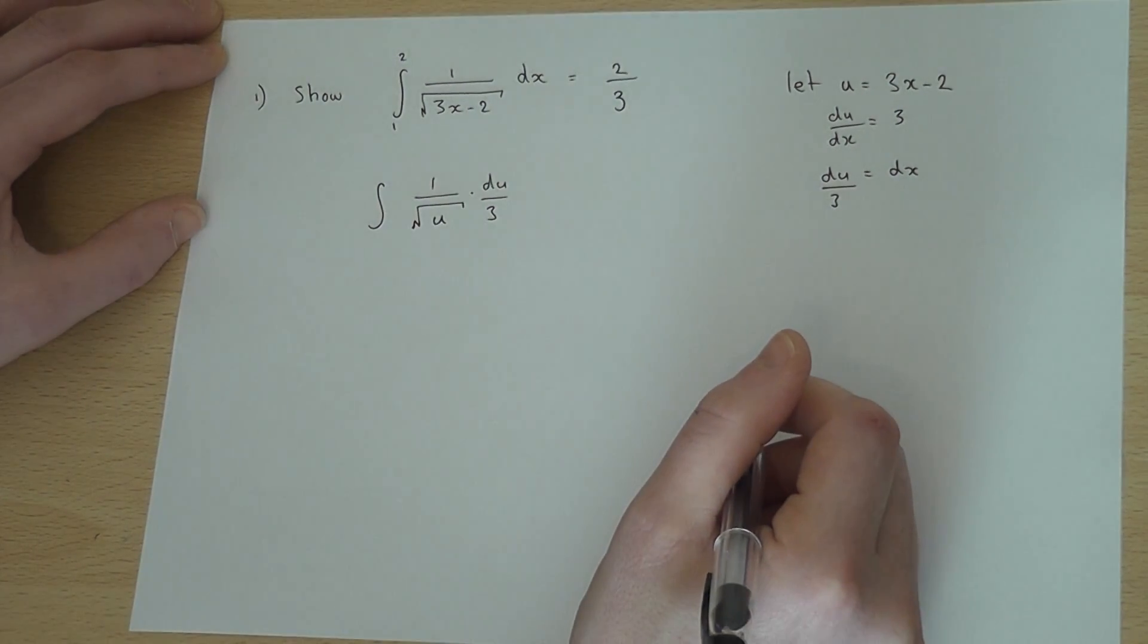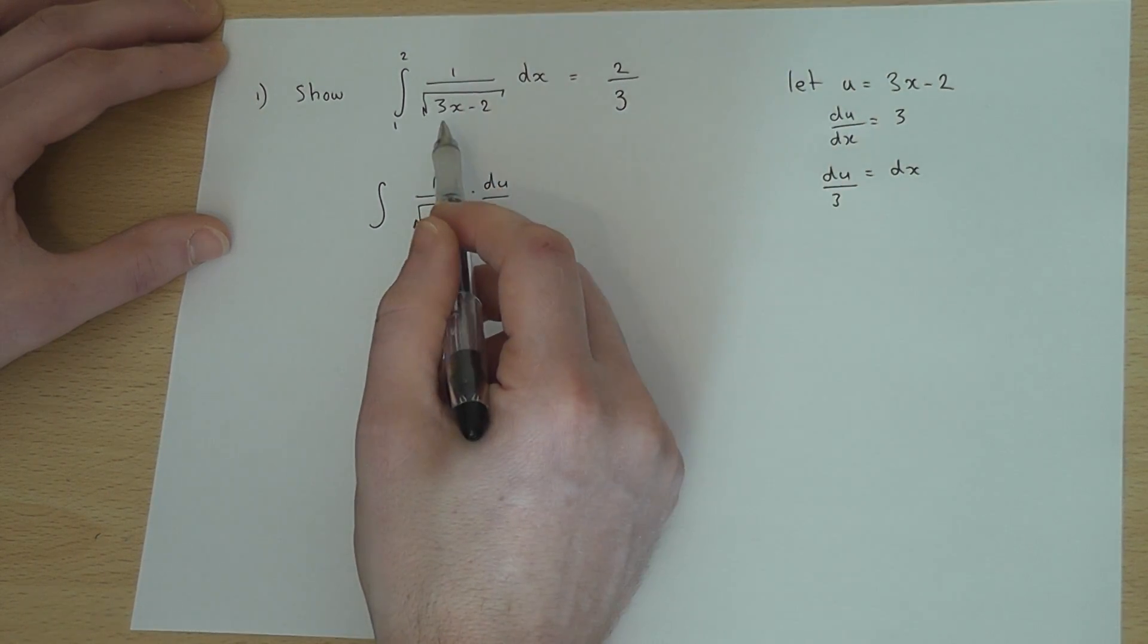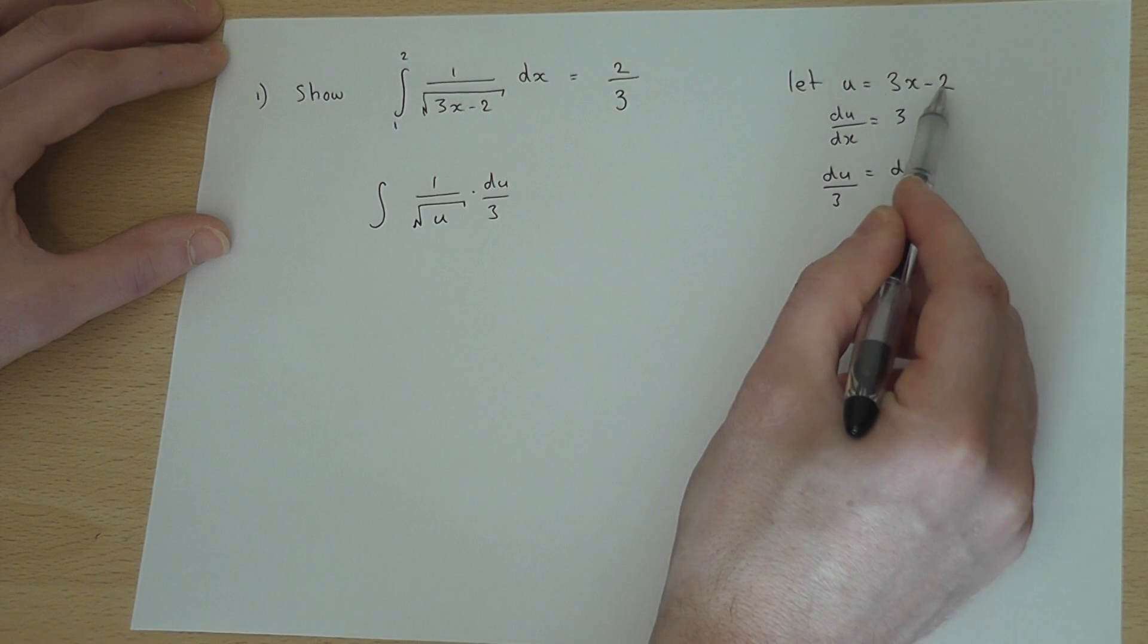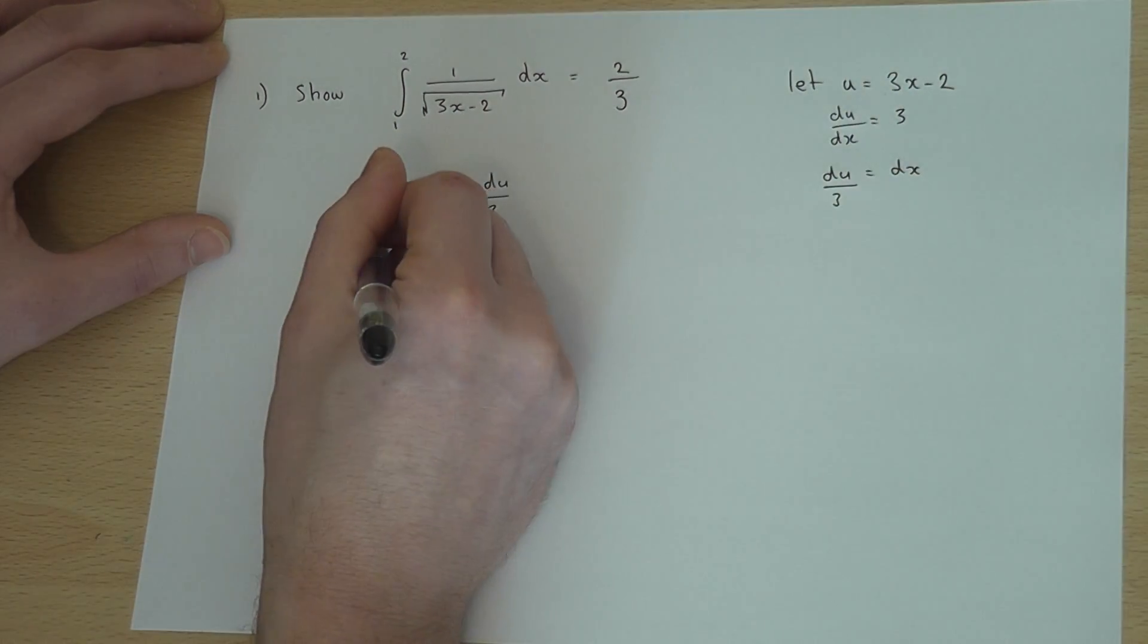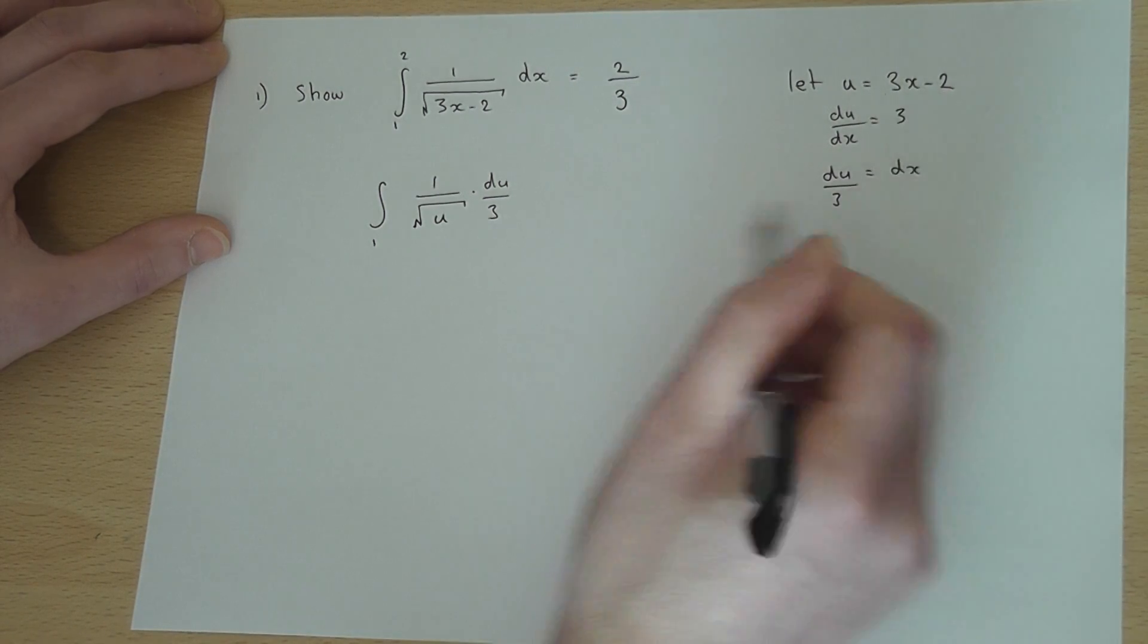However, because I've changed from the x to the u, I must also change the limits. Now, when x equals 1, u equals 3 times 1 take away 2, which is also 1. But when x is 2, 3 times 2 is 6, take away 2 is 4.